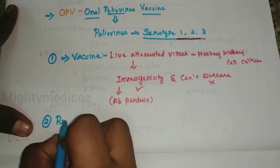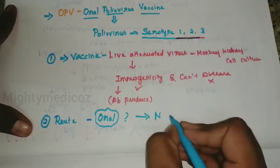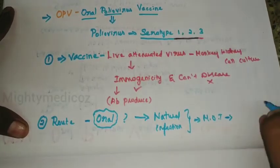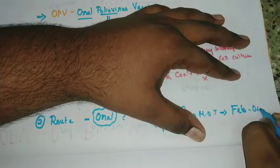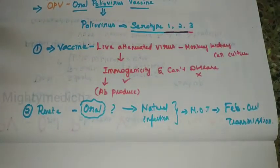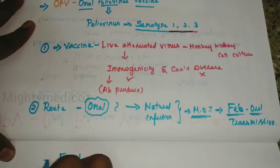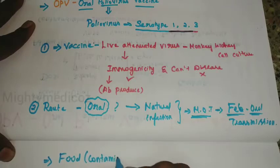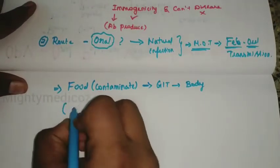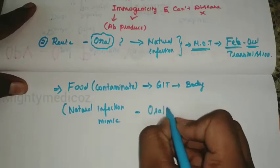The next question is: why should oral poliovirus vaccine be given via the oral route? The natural mode of transmission of poliovirus is the feco-oral route. That is why it affects the GI tract and then conducts to the nervous system, causing paralysis — that is polio. To mimic the natural infection, we use the oral route, so the virus enters the body through the GI tract.